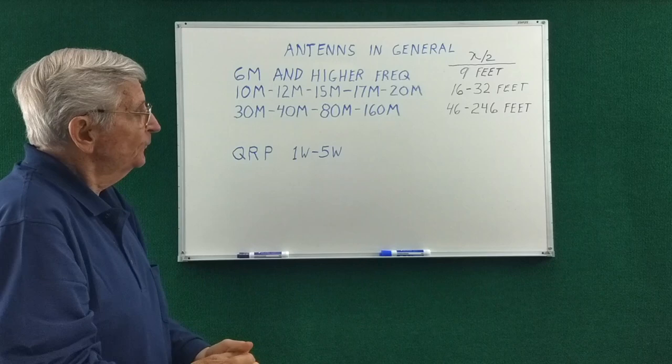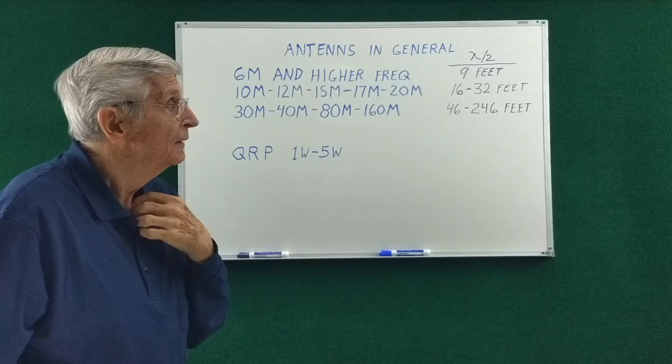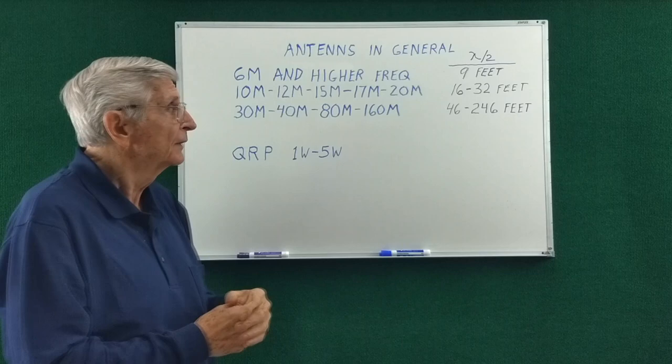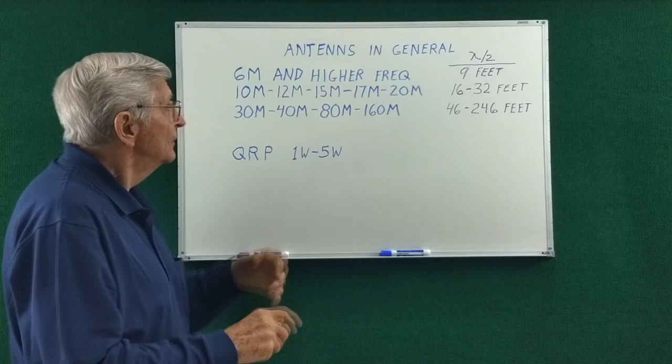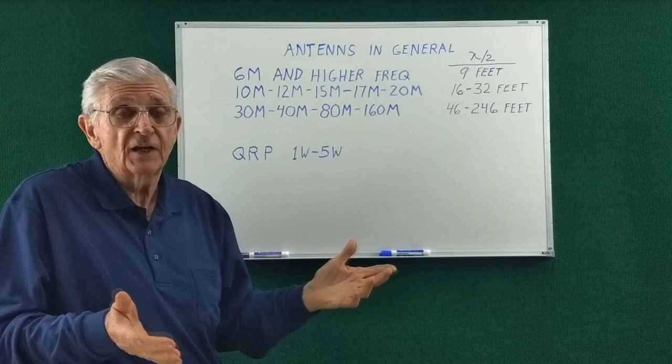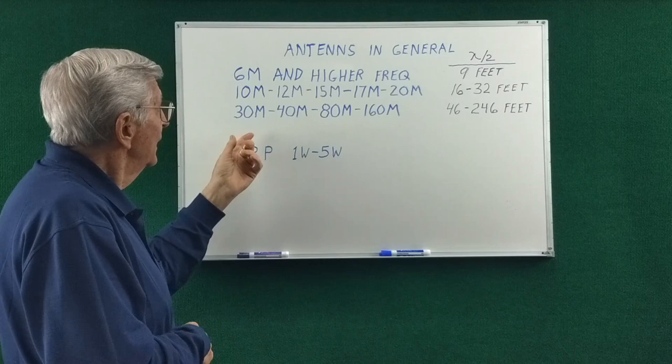Now on the bands of 10 to 20 meters, we're talking lengths of 16 to 32 feet. To get a fairly low takeoff angle of radiation, which is optimum for DX, you should be at least a half wavelength high. These aren't extremely difficult. Obviously they can be made self-supporting, because there's a lot of three-element yagis out there that cover that frequency range.